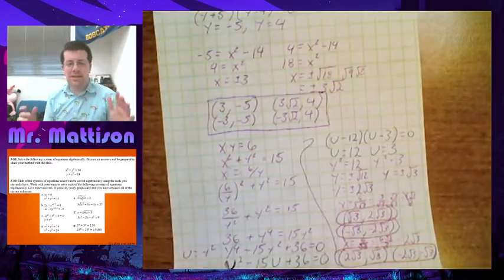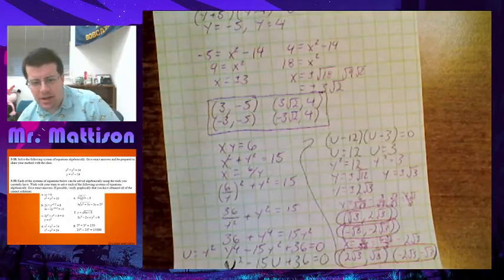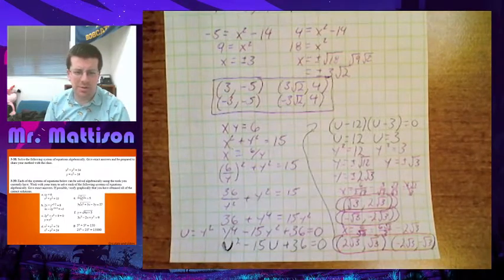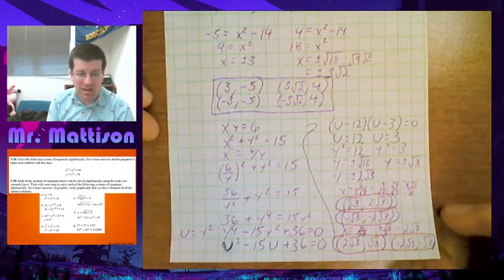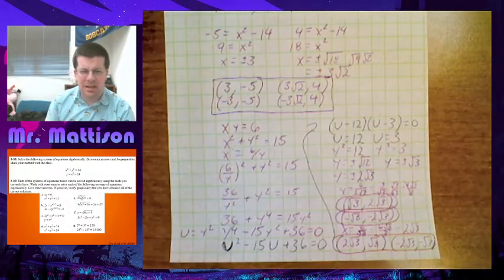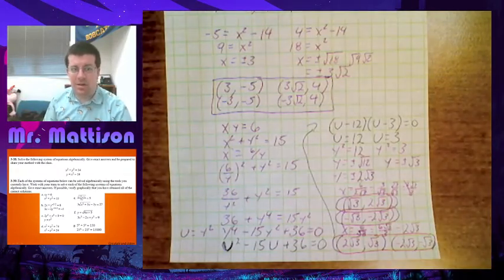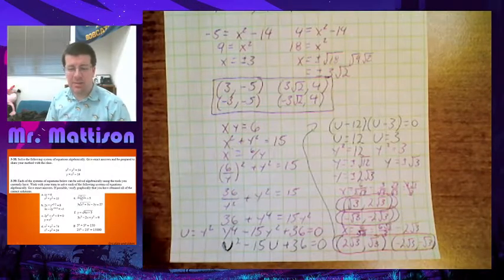That one is a bit nastier than it looks, but it does give us those four solutions. The U substitutions are the most beneficial part here. These take a bit of time and that's okay. Hopefully you're seeing why we like to do these by graphing when we get the option, but the skill of doing this algebraically translates to other things we'll need in the future.